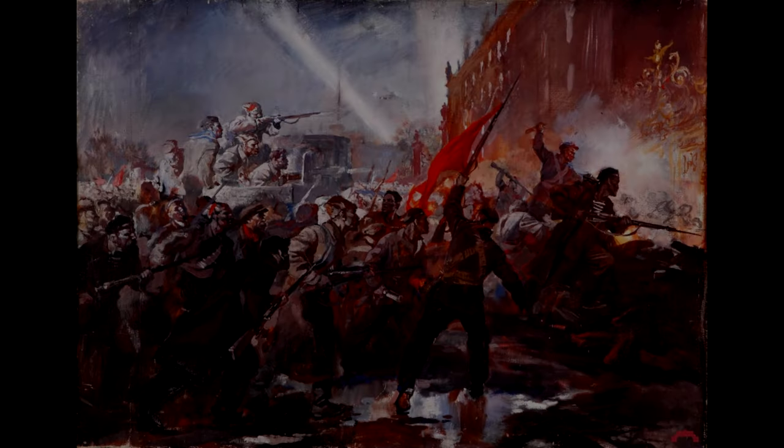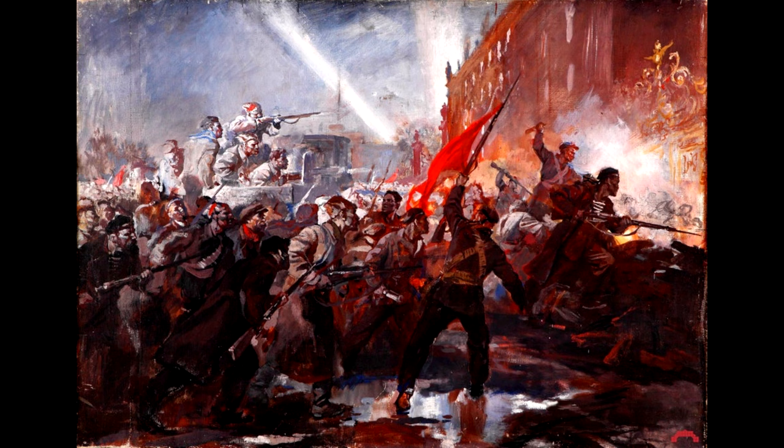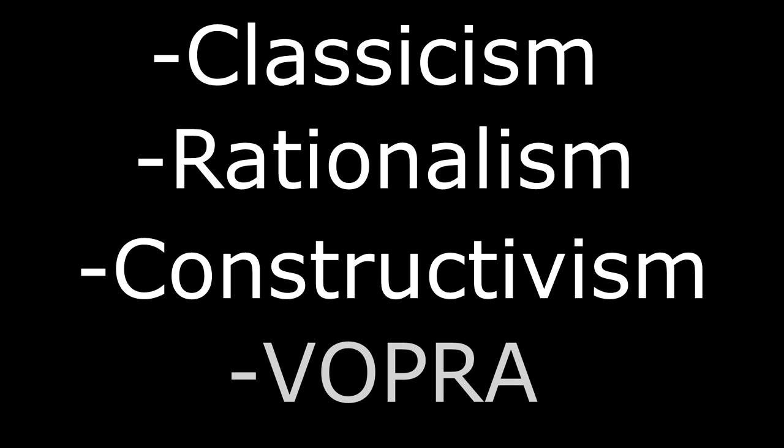When the working class and peasantry took power in Russia in October 1917, there were three main architectural tendencies which all competed with each other: realistic classicism, rationalism, and constructivism. Later a fourth group, so-called proletarian architects, organized themselves into VOPRA, or the All-Union Society of Proletarian Architects.